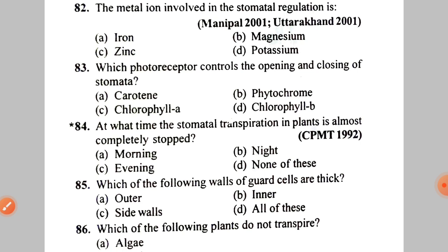Next: the metal ion involved in stomatal regulation is A. Iron, B. Magnesium, C. Zinc, D. Potassium. The correct answer is D — Potassium.